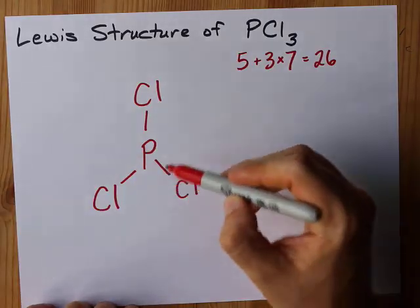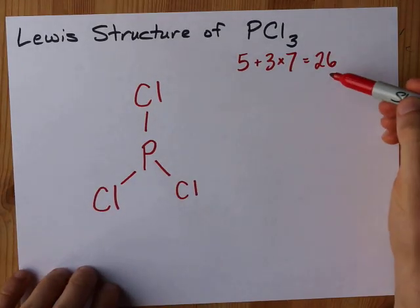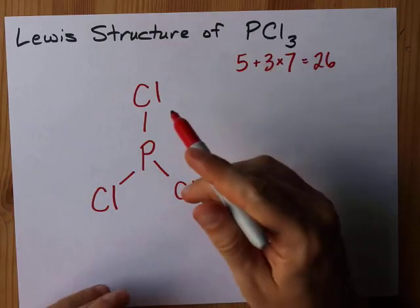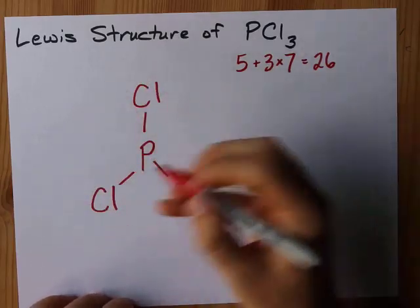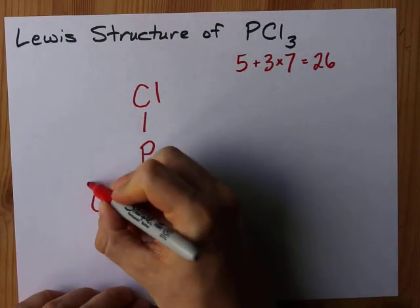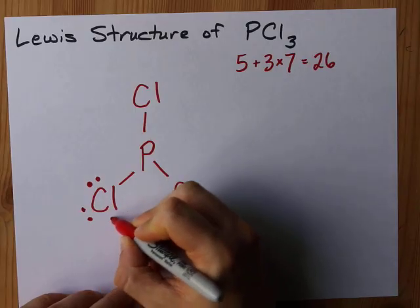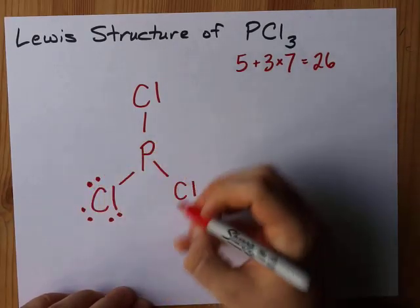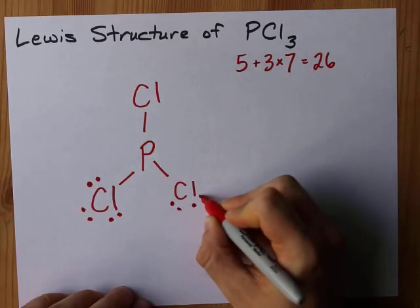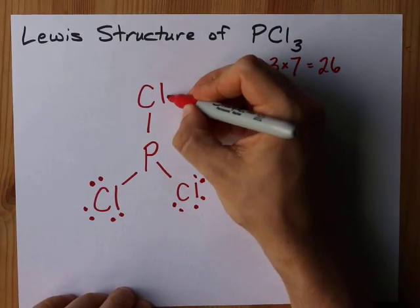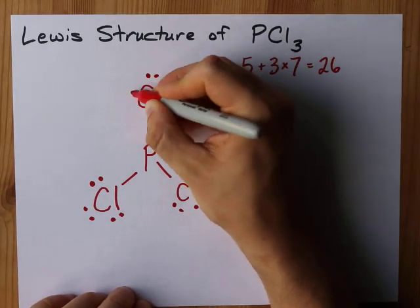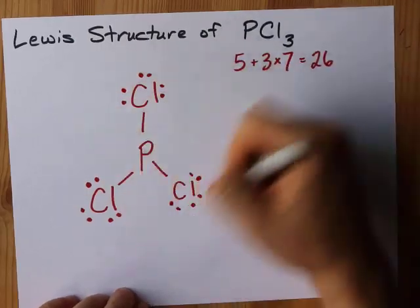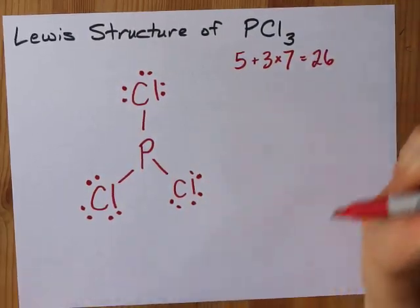2, 4, 6 electrons have been accounted for, and I need 26. I'm going to fill the octets on the outer atoms first. 2, 4, 6, 8, 10, 12, now he has 8, 14, 16, 18, 20, 22, 24. Now all the chlorines have a full octet.